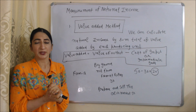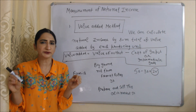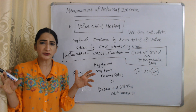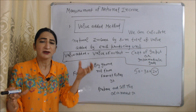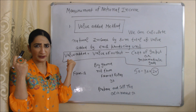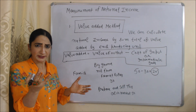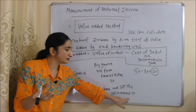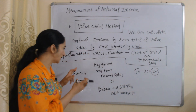The first method to measure national income is the Value Added Method. According to this method, we can calculate national income by summing the value added by each producing unit. As we know, there are many producing units and each one adds some value to the product. For example, Firm A buys groundnut from Firm B and prepares oil. Firm A buys groundnut at rupees 30 and sells the oil in the market at rupees 50.